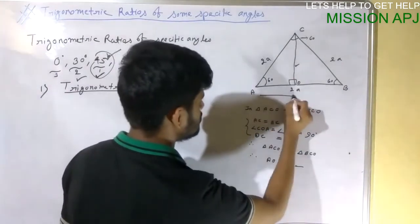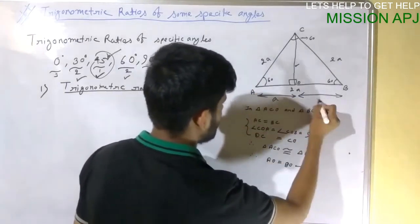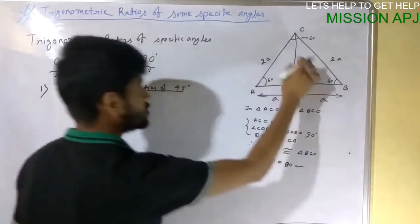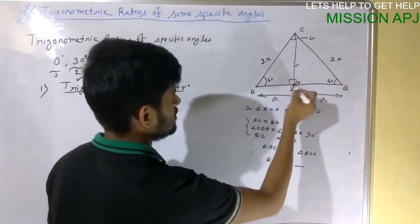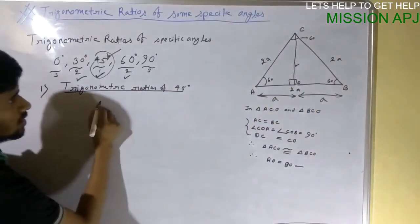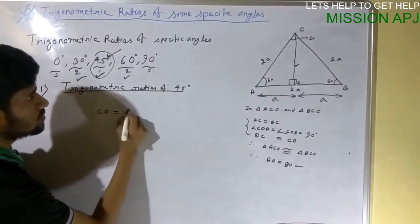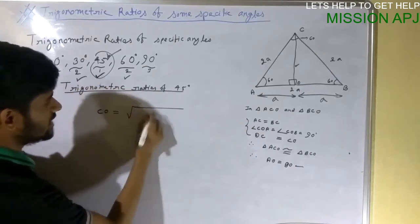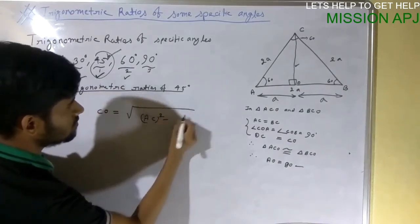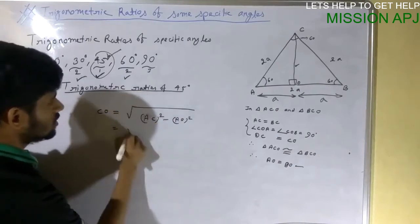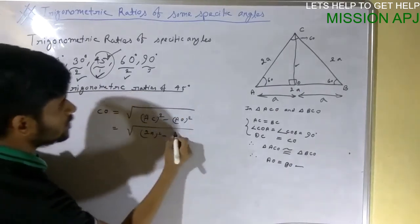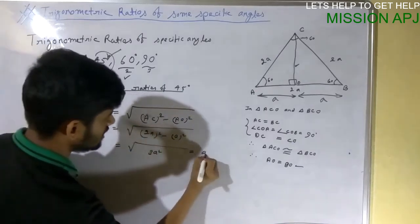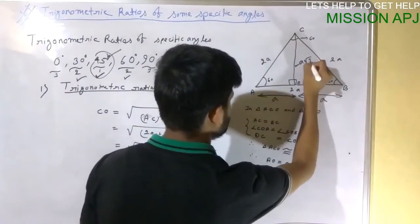Since AO = BO and the whole length AB = 2a, each part is a. So AO = a. Now we need to find CO using the Pythagorean theorem. CO = √(hypotenuse² − base²) = √(AC² − AO²) = √(4a² − a²) = √(3a²) = a√3. So this value is a√3.